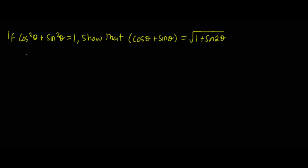Hello, welcome to Powerland Signs and Mass TV. In this video we are showing that cos θ + sin θ is equal to the square root of 1 plus sin 2θ, given that cos²θ + sin²θ is equal to 1.